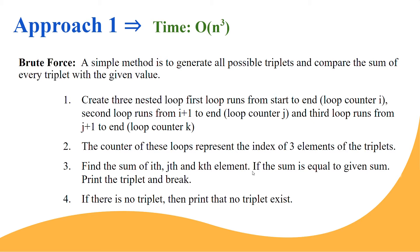The three loop counters i, j, and k represent the indices of the three elements of the triplet. We find the sum of the i-th, j-th, and k-th elements — if the sum equals the given sum, we print the triplet and break. Three pointers are needed because we need to check all possible triplets. If we fix one element, we check all combinations of two elements with it. If no triplet is found, we print that it doesn't exist.